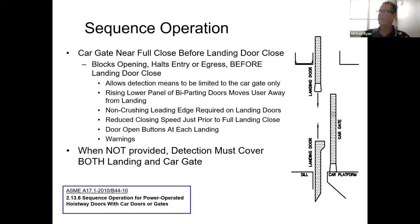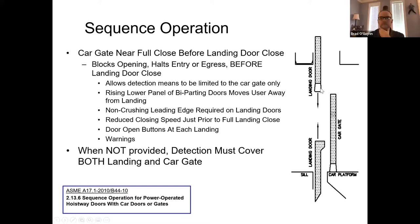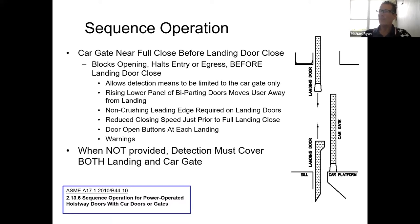That required that the car gate had some sort of safety device on it, and that only the landing door required a non-crushing leading edge. So only the door had a non-crushing edge, but the car gate had to have a device on the bottom. That is sequence operation — gate closing before the door.